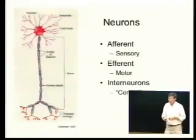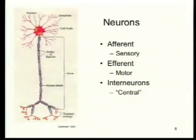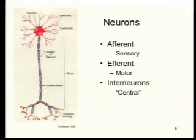Here's what a neuron looks like. There are lots of different kinds of neurons — they come in somewhat different shapes and sizes, but they all have the same basic structures. There is a cell body with dendrites branching out, then a long filament-like axon, and the axon ends in terminal endings, which kind of look like dendrites in reverse.